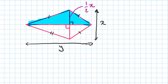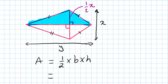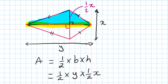The area of this triangle is a half times base times height. The base is y, so it's a half of y, and the height is half of x, so times a half of x.